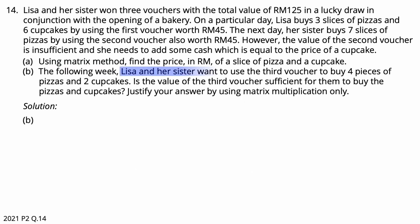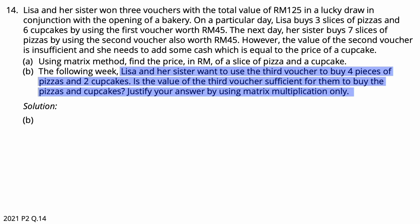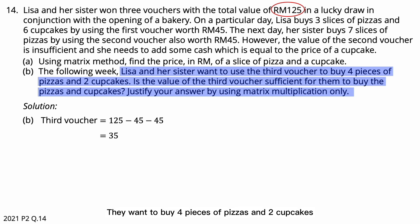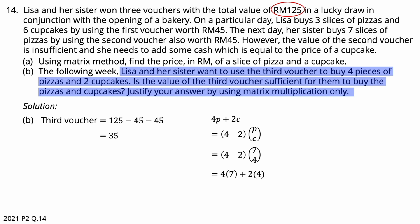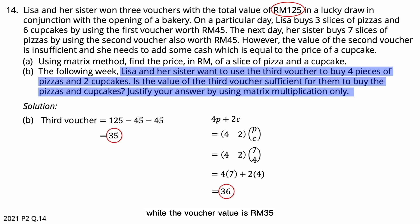Question 14b: Lisa and her sister want to use the third voucher to buy 4 pieces of pizza and 2 cupcakes. Is the third voucher sufficient? The three vouchers total RM125, so the remaining value of the third voucher is 125 − 45 − 45 = RM35. Using matrix multiplication: row matrix [4, 2] times column matrix [P; C] = 4×7 + 2×4 = 36. The purchase value is RM36 while the voucher value is RM35, so the voucher is insufficient.